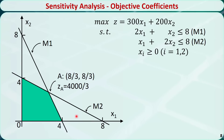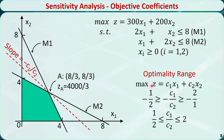Now let's perform sensitivity analysis on the objective coefficients. For a general maximization problem where z equals c1·x1 plus c2·x2, the slope of the objective function is minus c1 over c2. This slope should remain between the slopes of the two constraints so that the optimal solution is unchanged. This means the optimality range of c1 over c2 is between 1/2 and 2.